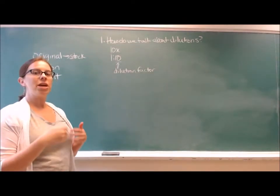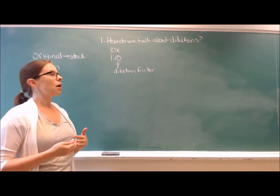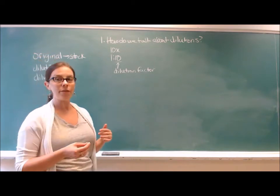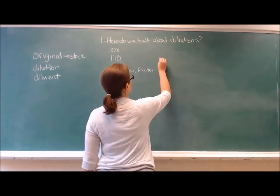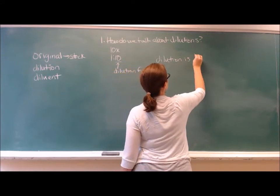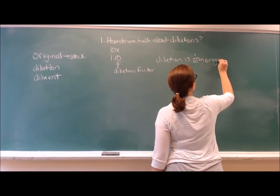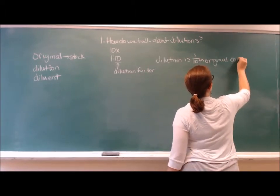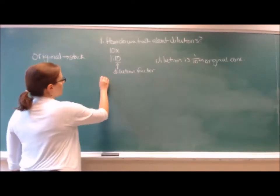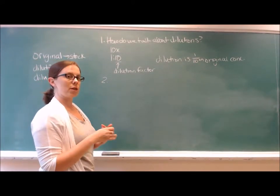So we want to make a 10-fold dilution, we're going to dilute it 1 to 10. Again, our stock concentration is 10x. Therefore, our dilution is 1 tenth of the original concentration. So how do we figure out the final concentration if we know the stock concentration?